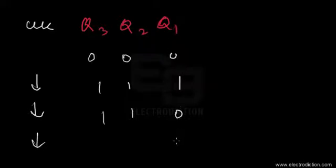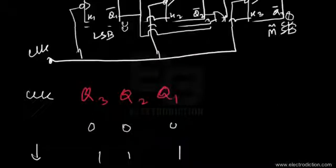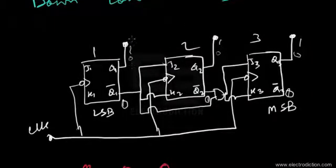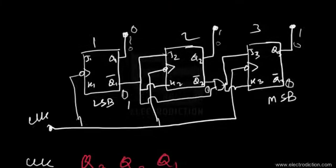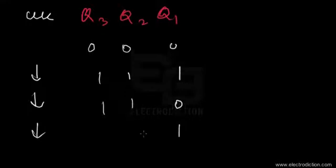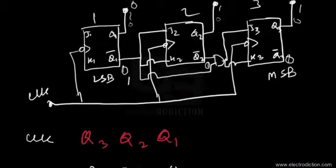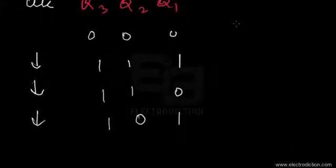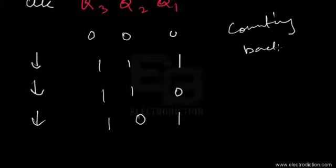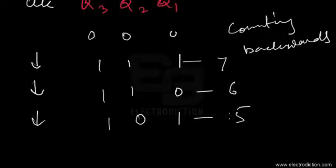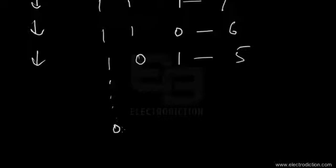On the third clock pulse's negative edge, flip-flop one's Q1 output toggles back to one. When Q1 moves to logic zero, its Q1-bar becomes one, putting flip-flop two in toggle mode — so it toggles from one to zero — while flip-flop three, still having logic zero at its J and K inputs, retains its state. The counter is counting backwards: from state seven, to six, to five, continuing down until it reaches state zero.